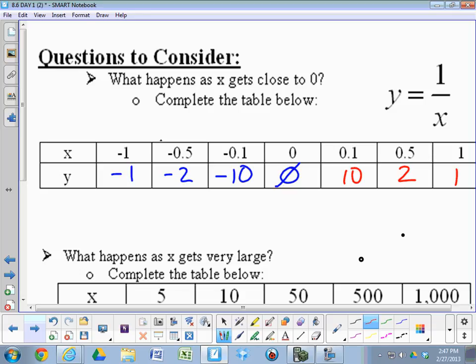But 1 over 1, 1,000 is 1,000. And 1 over 1, 1 million is 1 million. So what's happening there is as x gets very tiny, y gets very large.